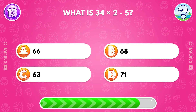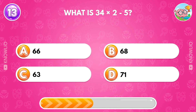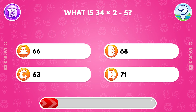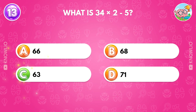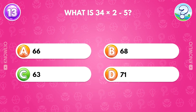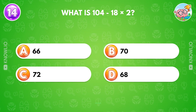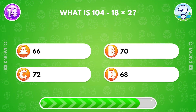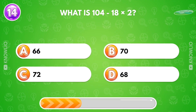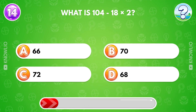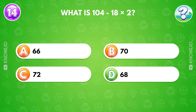What is 32 times 4 minus 5? Answer C, 63. What is 104 minus 18 times 2? Answer D, 68.